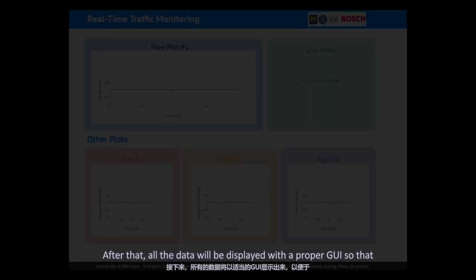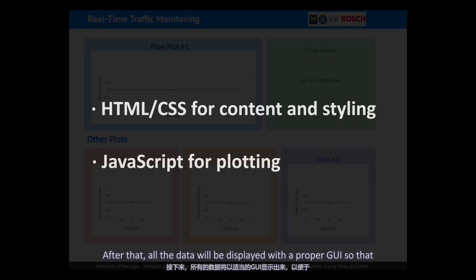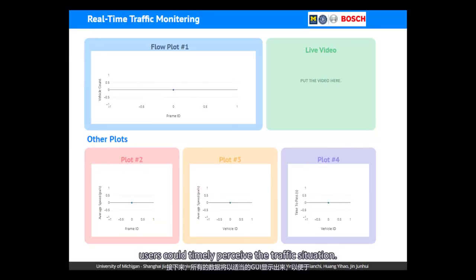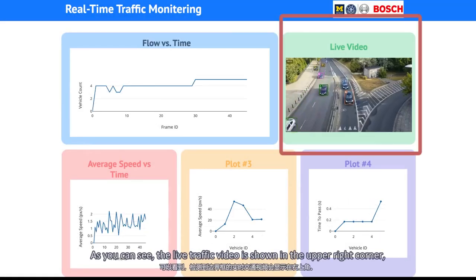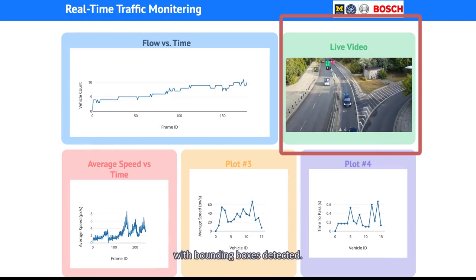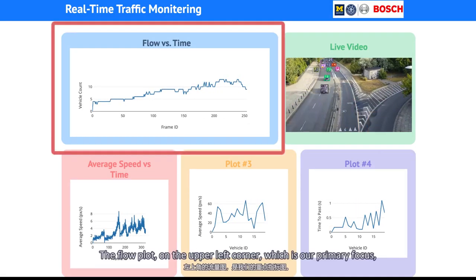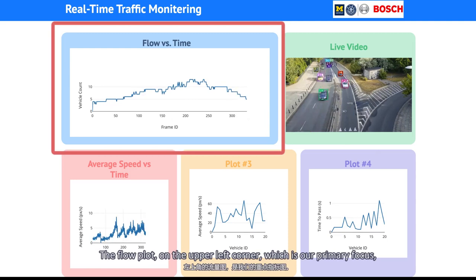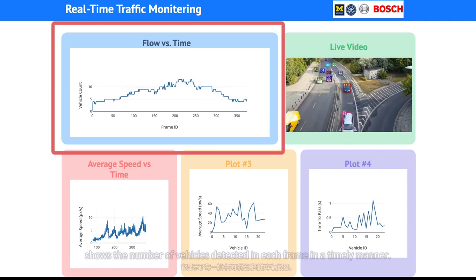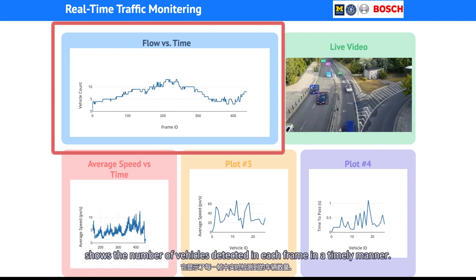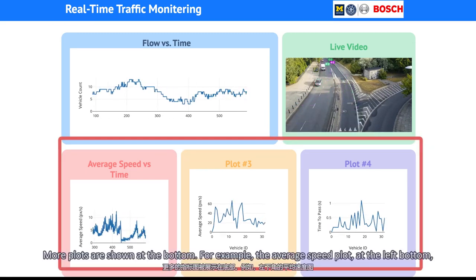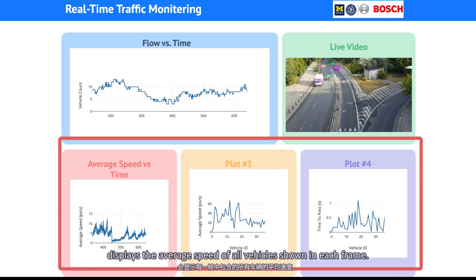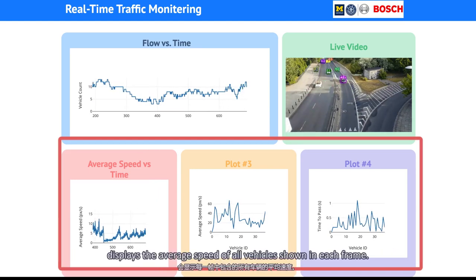After that, all the data will be displayed with a proper GUI so that users can timely perceive the traffic situation. As you can see, the live traffic video is shown in the upper right corner with bounding boxes detected. The flow plot on the upper left corner, which is our primary focus, shows the number of vehicles detected in each frame in a timely manner. More plots are shown at the bottom — for example, the average speed plot at the lower left displays the average speed of all vehicles shown in each frame.